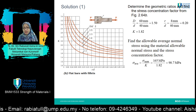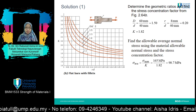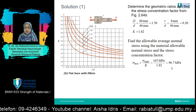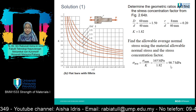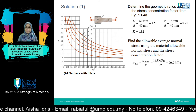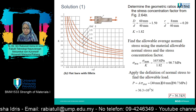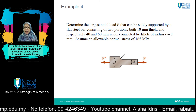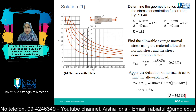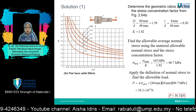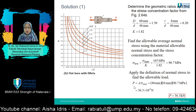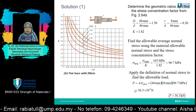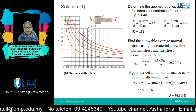Since the question asks for the allowable normal stress, substitute into the formula: sigma_average equals sigma_max divided by K. You get sigma_average equal to 90.7 MPa. Recalling that sigma equals P over A, rearranging gives the formula for P. Substituting all obtained values, you finally get P equals 36.3 kN.